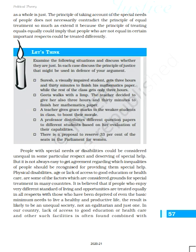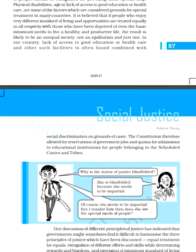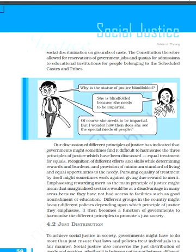So these were the three principles we have discussed. The first is equal treatment for equals — those who are equal should receive equal treatment. The second is recognition of different efforts and skills while determining rewards and burdens. The third principle says that provision of minimum standard of living and opportunities to the needy — deprived, disadvantaged, and disabled persons — should be provided minimum standard of living and equal opportunities. In this way only can we have the creation of an egalitarian society, an ideal society, or a just society.